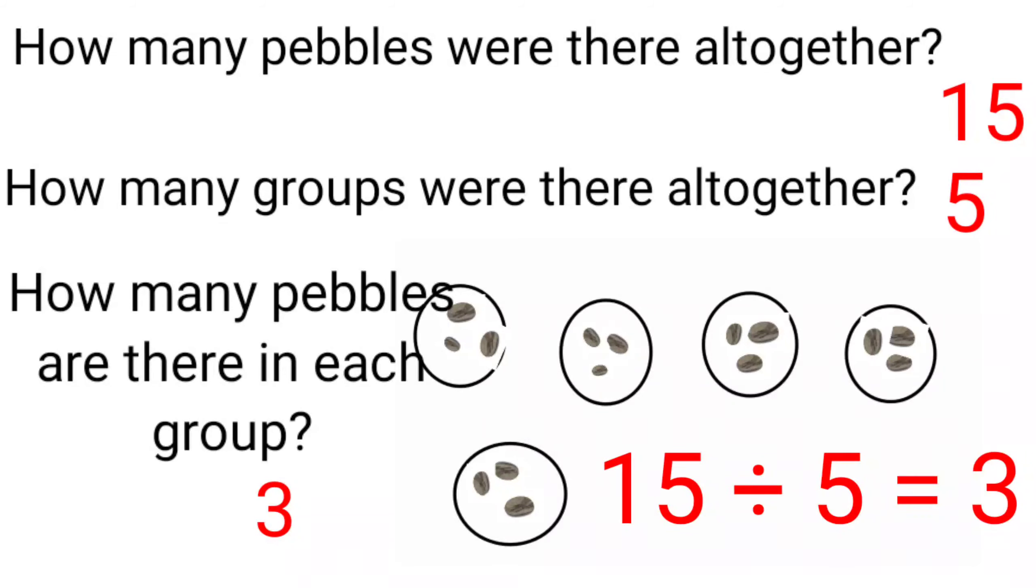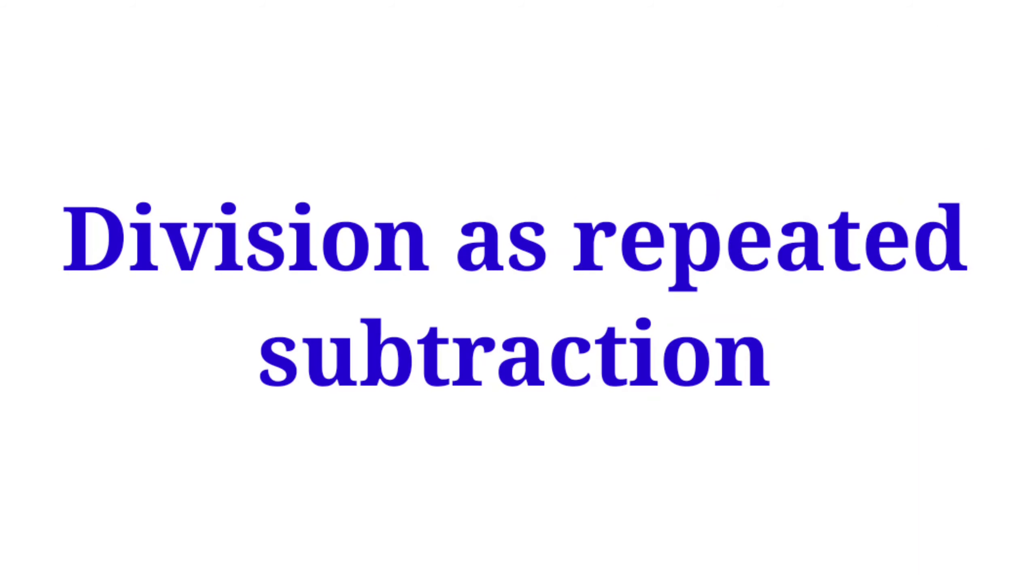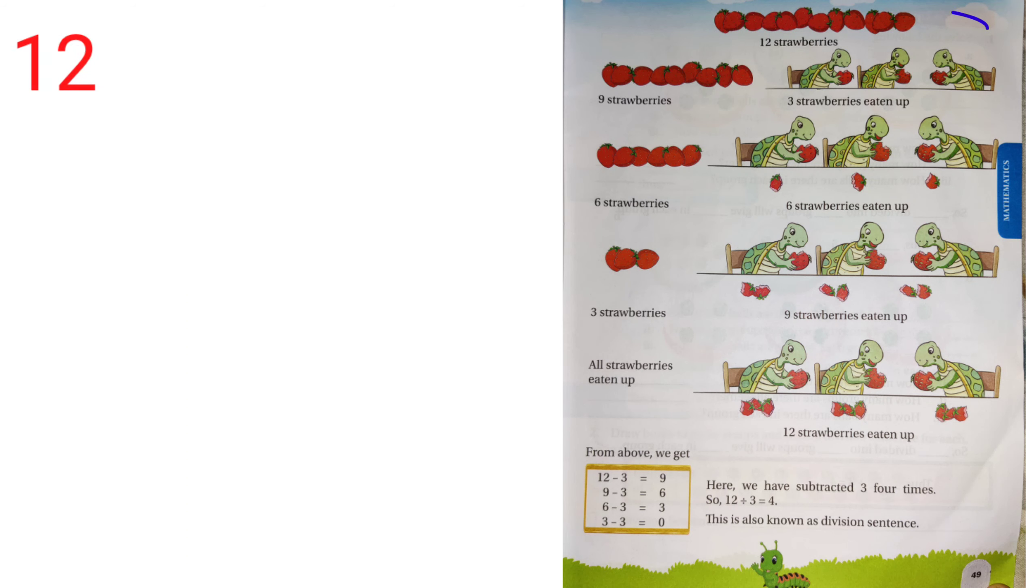Now, let's see division as repeated subtraction. Here also, let's take one example. Let's take 12 strawberries. And among that, 3 strawberries are eaten up. So, how many strawberries are left? 12 minus 3 equal to 9 strawberries.